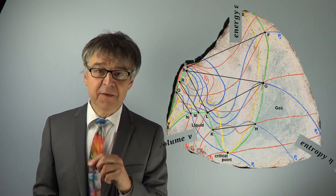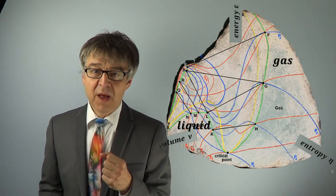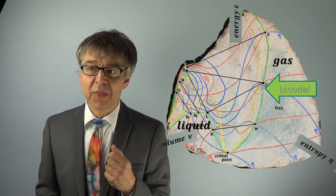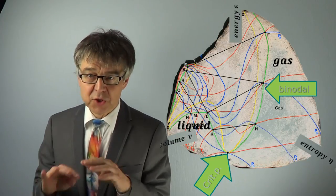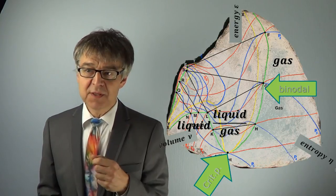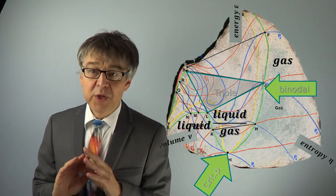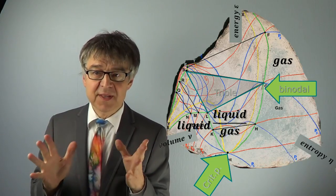We distinguish single-phase areas, gas, liquid, the green binodal with a critical point, which defines the boundaries of the homogeneous areas, the two-phase regions, liquid and gas, and the triangle, which is the triple state, the coexistence of gas, liquid and solid state.